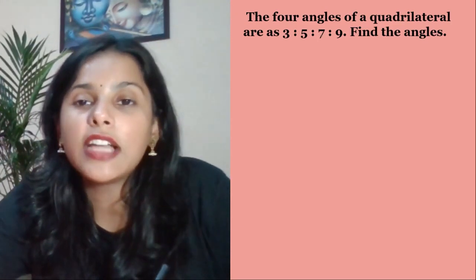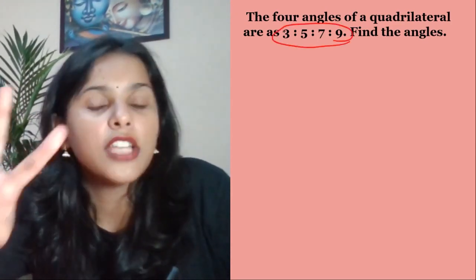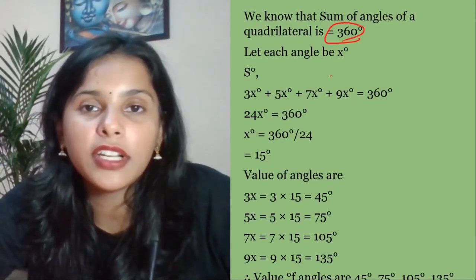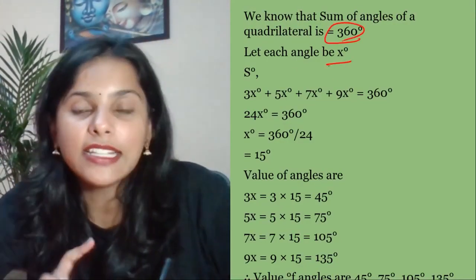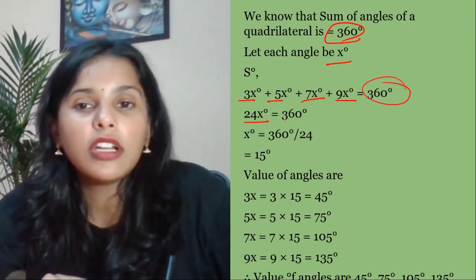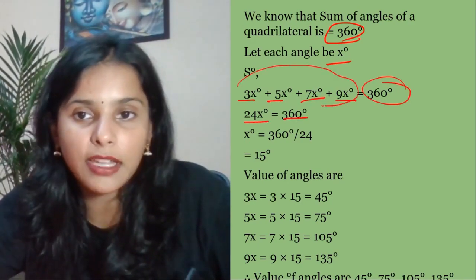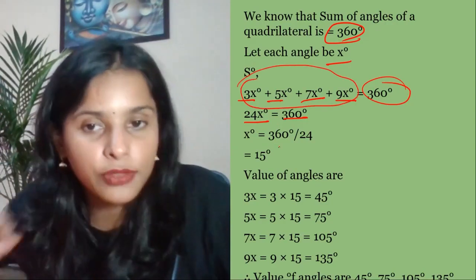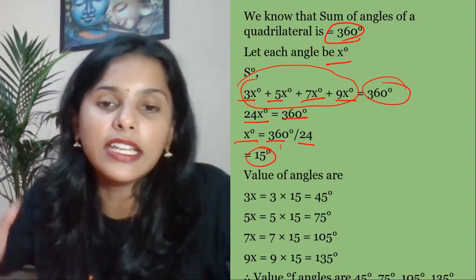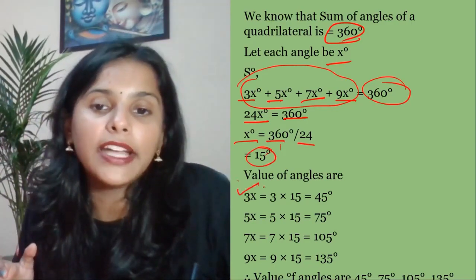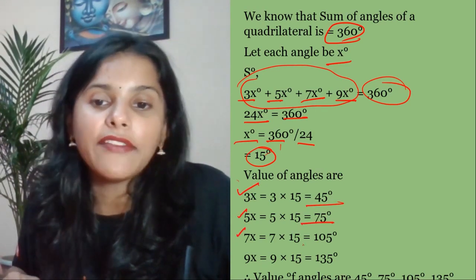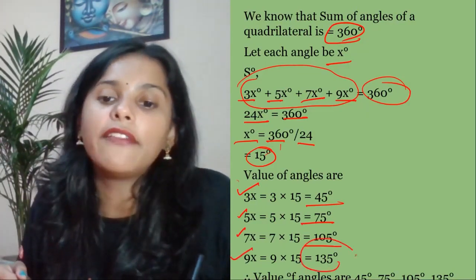Question 5: The four angles of a quadrilateral are in the ratio 3:5:7:9. Find the angles. The sum of angles of a quadrilateral is 360 degrees. So 3x + 5x + 7x + 9x = 360, giving 24x = 360, x = 15. The four angles are 45, 75, 105, and 135 degrees.